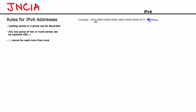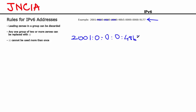If we remove the leading zeros it's going to look like this. The first group does not have any leading zeros so it stays as 2001. Then the first three leading zeros can be discarded, so you're left with a 0. Again you can discard the three leading zeros, left with a 0. The same applies for the next groups, leaving a 0 each time. Then 48B5, and then discarding leading zeros leaves a 0, again a 0, and then 9177. That's how the IP address looks after applying rule 1.